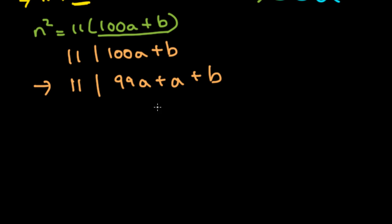The reason why I did this was, we know that 11 will divide 99A because 99 is a multiple of 11. So 11 must also divide A plus B right here. We get another condition. That condition is 11 divides A plus B.